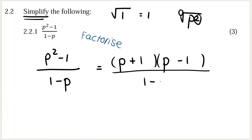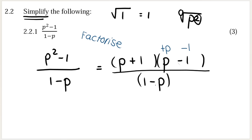At the bottom, we have one minus p. You might think we can cancel these two brackets, but you're almost right — not quite yet. Why can we not cancel p minus one and one minus p? Because they are not identical, and they need to be identical in order to cancel. This is a positive p and negative one up top, but a negative p and positive one at the bottom. The signs of the p and the one must be the same in both brackets — they must be identical.